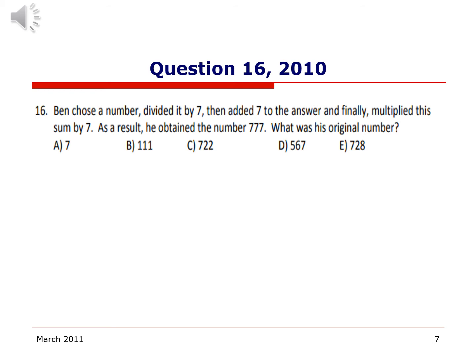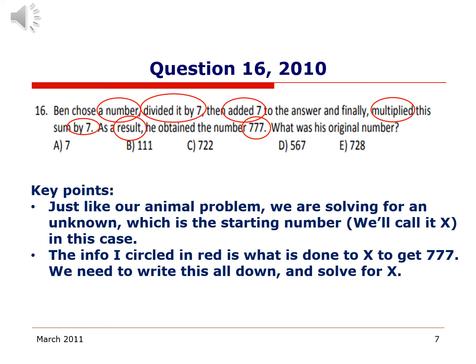On to question 16 from the same test in 2010. Our friend Ben chose a number, divided it by seven, then added seven to the answer, and finally multiplied this number by seven. As a result, he obtained the number 777. The question is, what was the number he started with? Just like our animal problem we're solving for an unknown, which is his starting number, we'll call it x. The info I circled in red is what's done to get x to get 777. All we need to do now is solve for x.